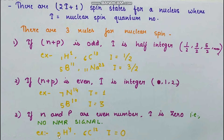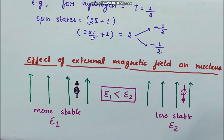For example, if the number of protons is 2 and the number of neutrons is also 2, both are even, so I will be 0. To calculate the number of spin states we use the formula 2I+1. For hydrogen, I is 1/2, so we place this value into the formula.